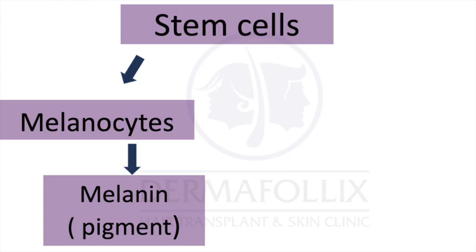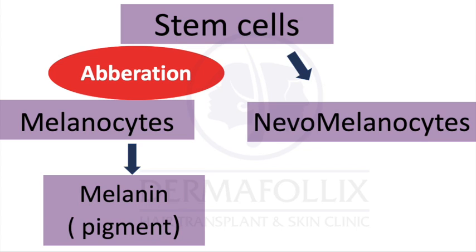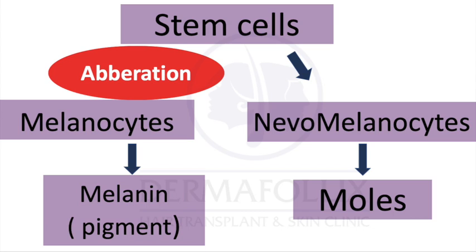So what is the real reason why moles occur? It is known that the stem cells which make melanocytes undergo a certain aberration in their maturation. Instead of forming melanocytes — the cells which produce the pigment melanin — they form nevomelanocytes, meaning cells which make the mole. So there is some kind of imbalance in the body that converts these stem cells into the cells which make moles.